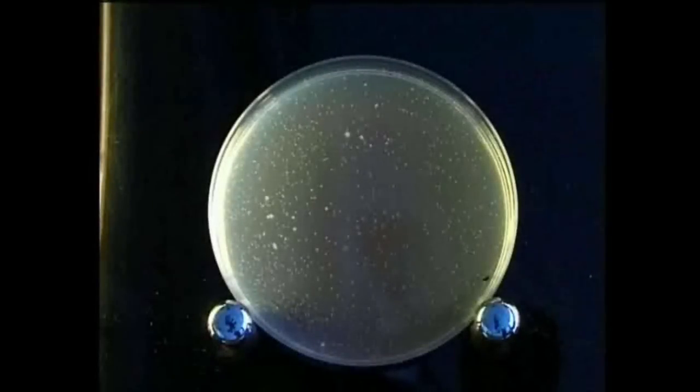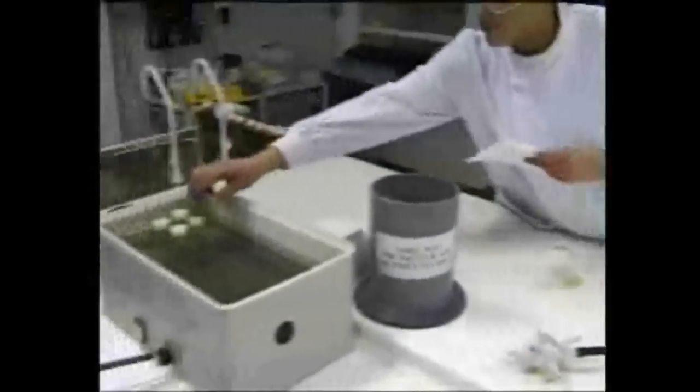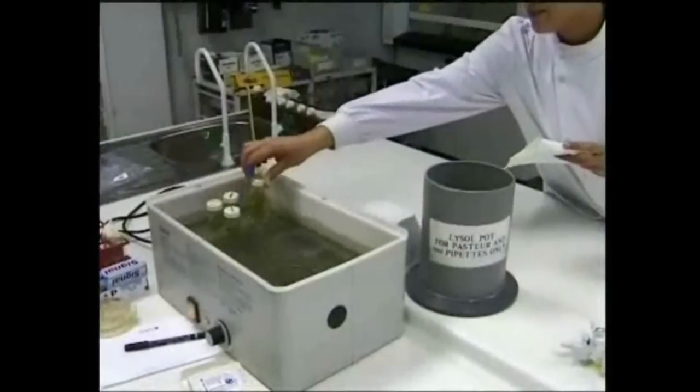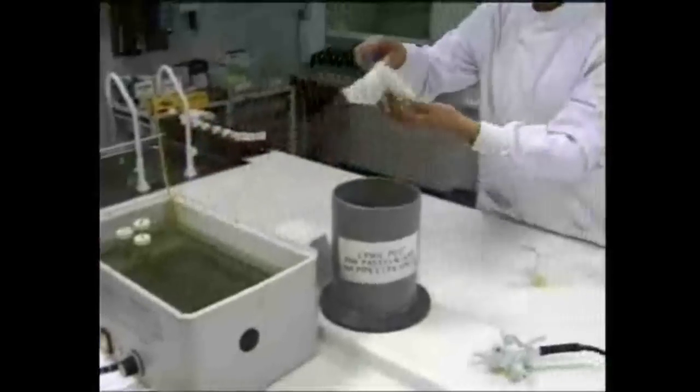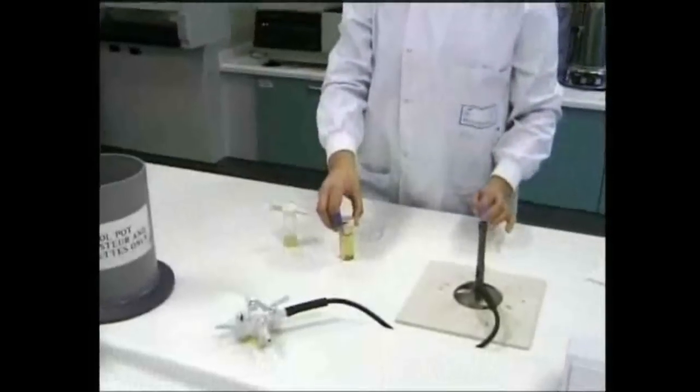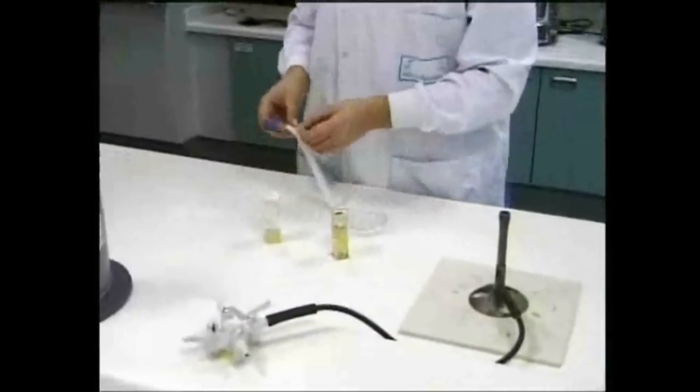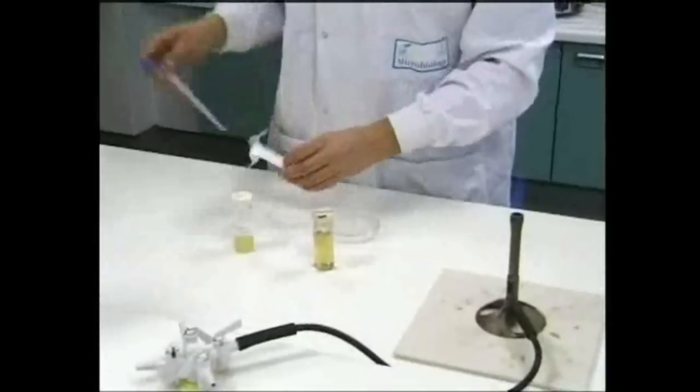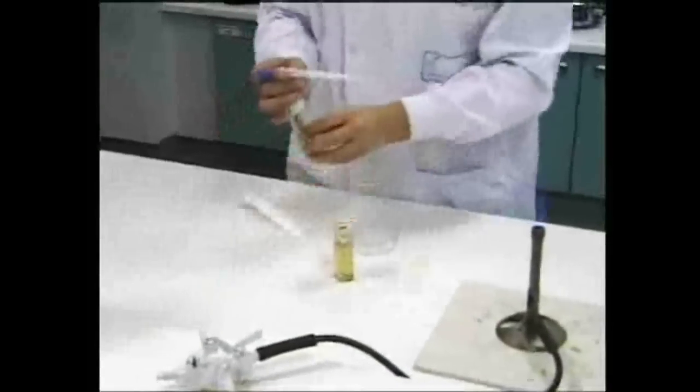The pour plate technique can also be used to isolate single colonies. It's easier to perform than streaking, and consists of inoculating the culture into a sterile tube or bottle containing about 15 cubic centimeters of molten agar at 45 degrees Celsius. The suspension can't be too concentrated, otherwise confluent growth will be obtained rather than isolated colonies.